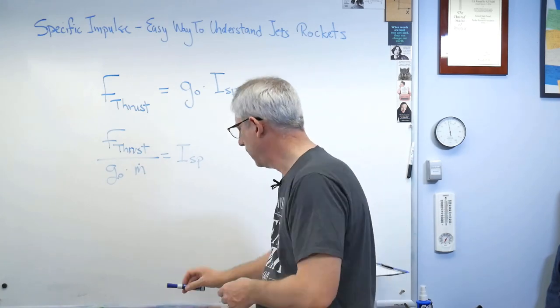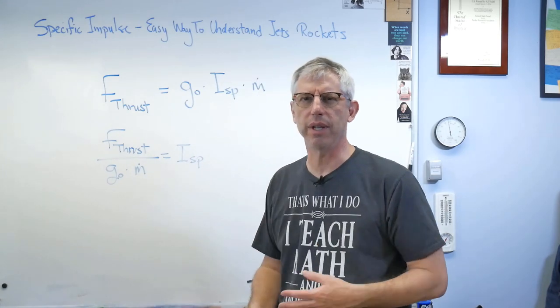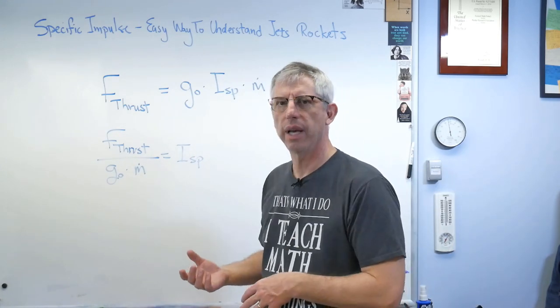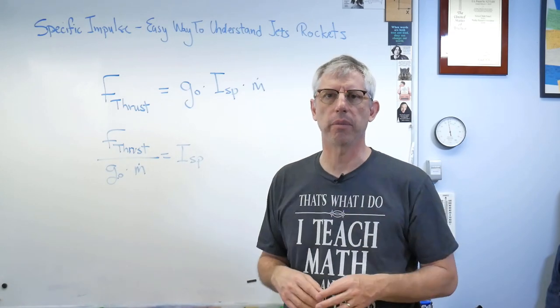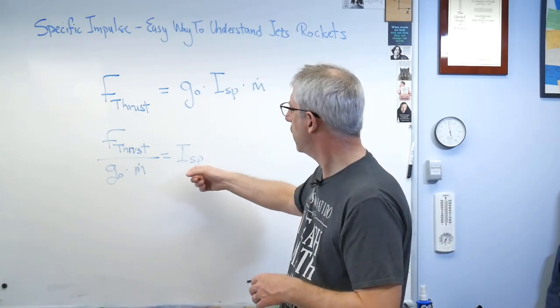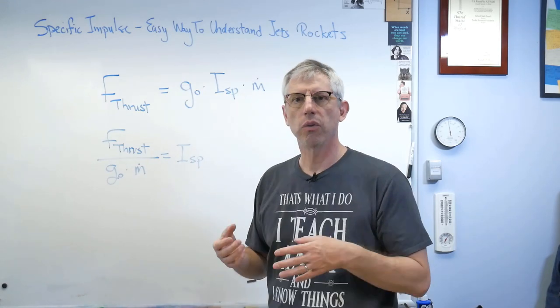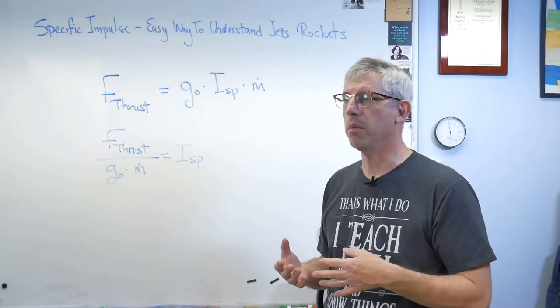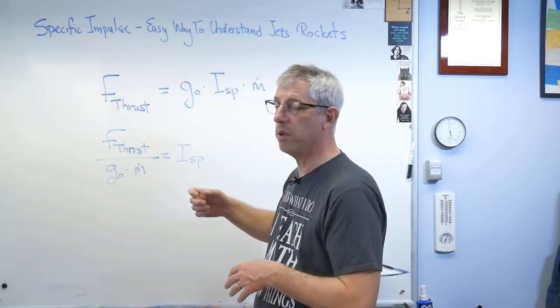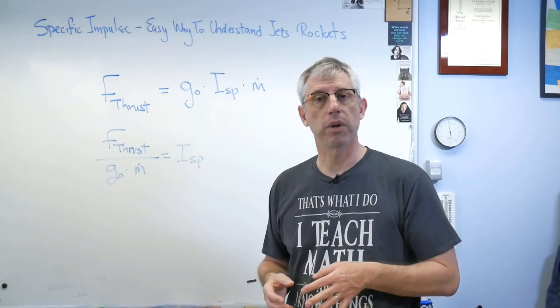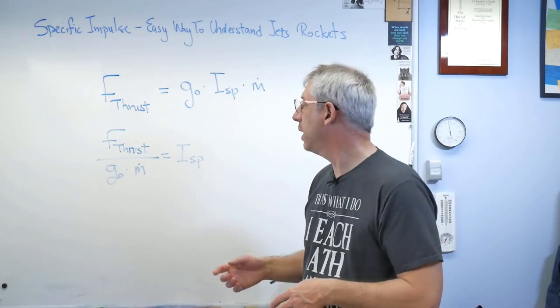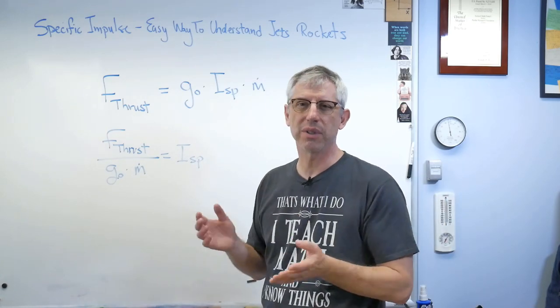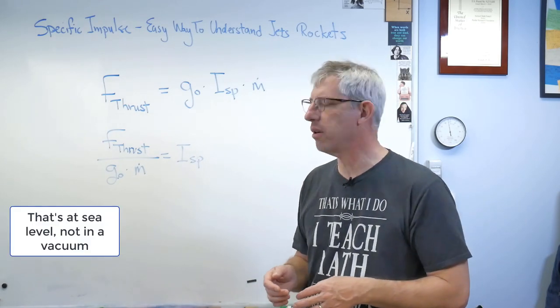What do we do with that? Where does this come from? You can measure it I suppose. Let me rearrange this equation just a little bit. All I'm going to do is divide through by g0 and m dot. So it's the thrust you get divided by your flow rate in weight instead of mass. And this comes out in seconds as the units.